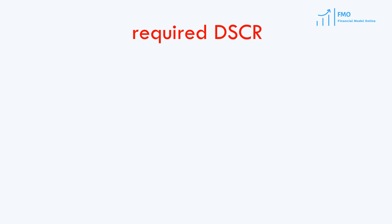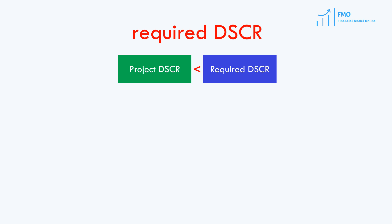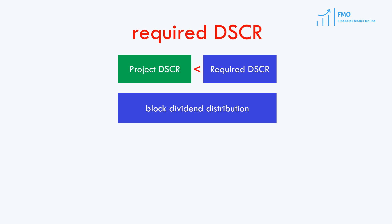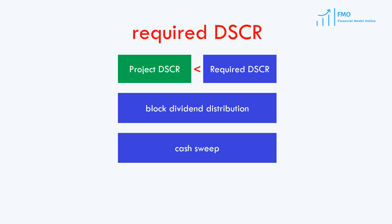After financial close, the lenders will use these ratios as part of the project monitoring and control functions. Where ratios do not achieve the levels required, the lenders will have a series of possible interventions, including blocking dividend distribution, sweeping cash from existing accounts, and applying reserve account money to debt service.